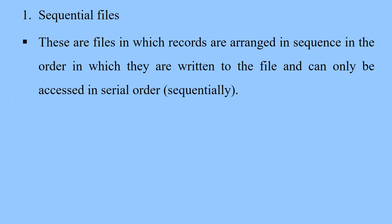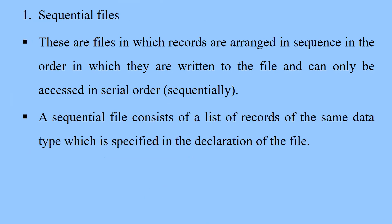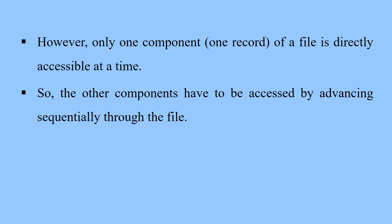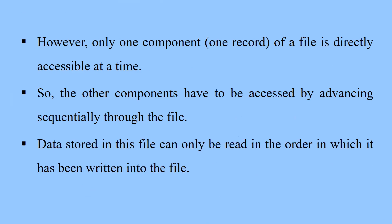So what are sequential files? These are files in which records are arranged in sequence in the order in which they are written to the file, and can only be accessed in serial order or sequentially. A sequential file consists of a list of records of the same data type, specified in the declaration of the file. The number of records need not be specified when the file is declared. However, only one component — that is, one record — is directly accessible at a time, so the other components have to be accessed by advancing sequentially through the file. Data stored in this file can only be read in the order in which it was written.